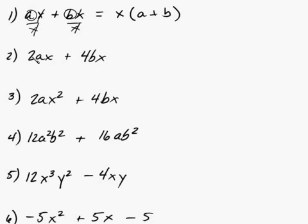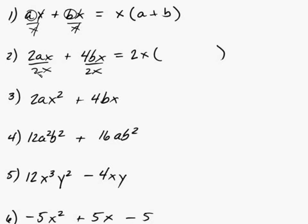Same problem, but now I'm putting a 2 and a 4 in. So common factors are x again, but this time I have a 2 and a 4. Two goes into 2 one time, 2 goes into 4 two times, so 2 works in both terms. So I'm going to factor out a 2x. Set up your parentheses and divide both terms by 2x. Everything cancels accordingly, and you're left with a plus 2b. So 2x times (a plus 2b).